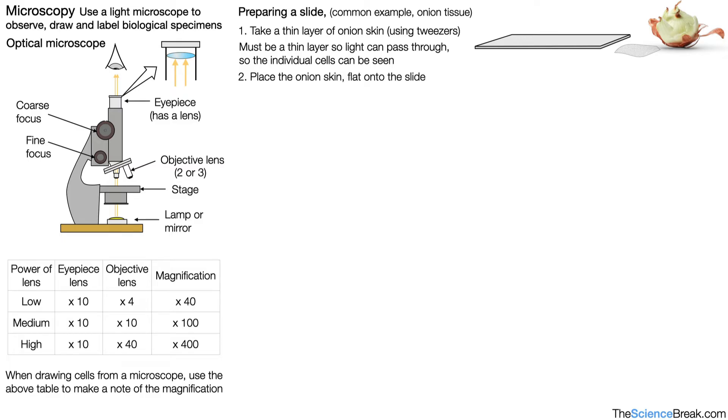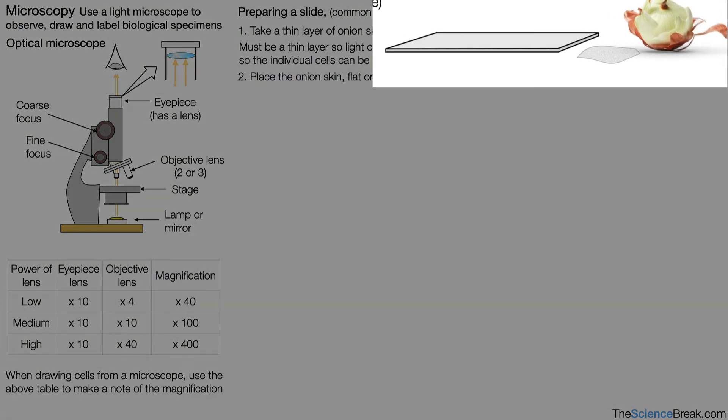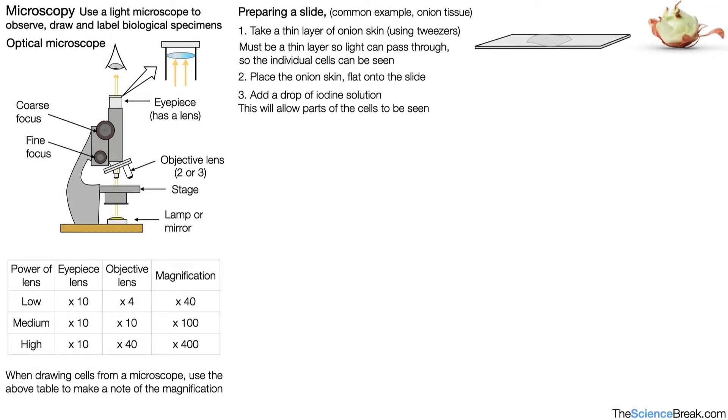Number two, place the onion skin flat onto the slide using our tweezers. So there it goes, flat onto our slide. And then we would often use a drop of iodine solution which will allow the parts of the cells to be seen. There's our drop of iodine and now we can see there's a little bit of color on our onion skin. We would then lower a cover slip at an angle onto the onion skin and we would lower at an angle to help prevent air bubbles.